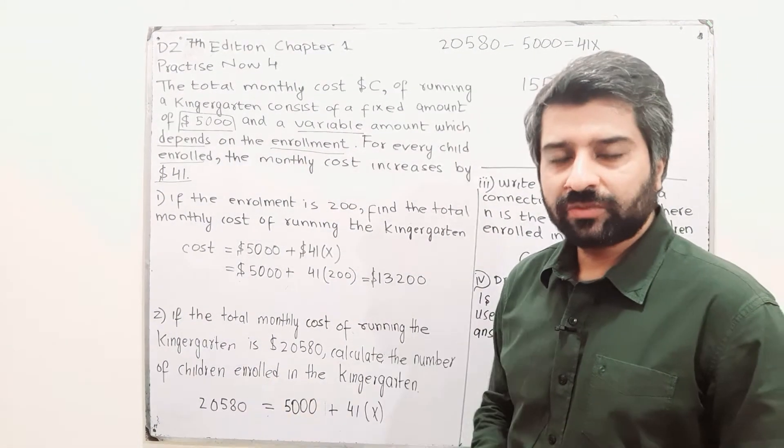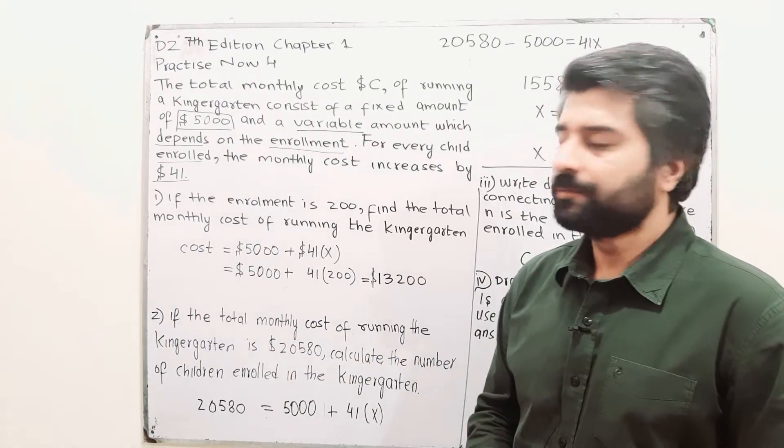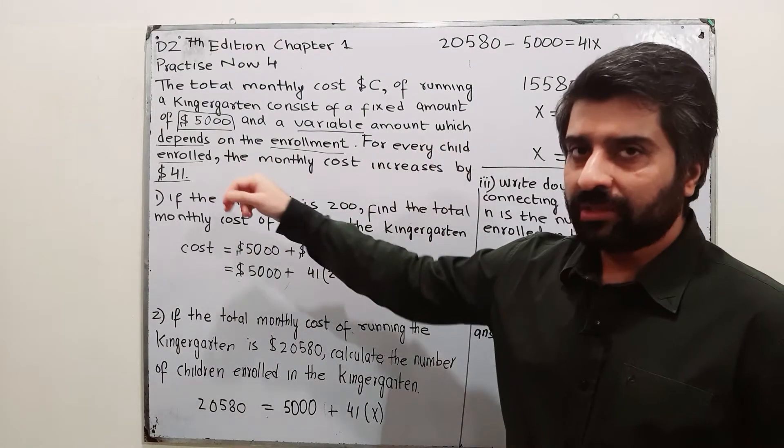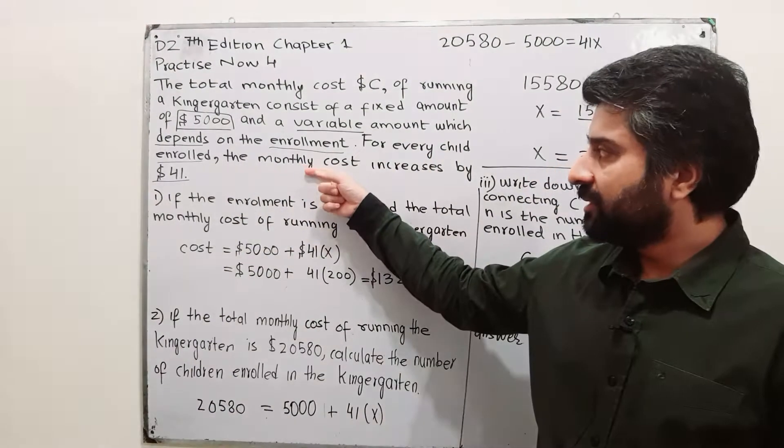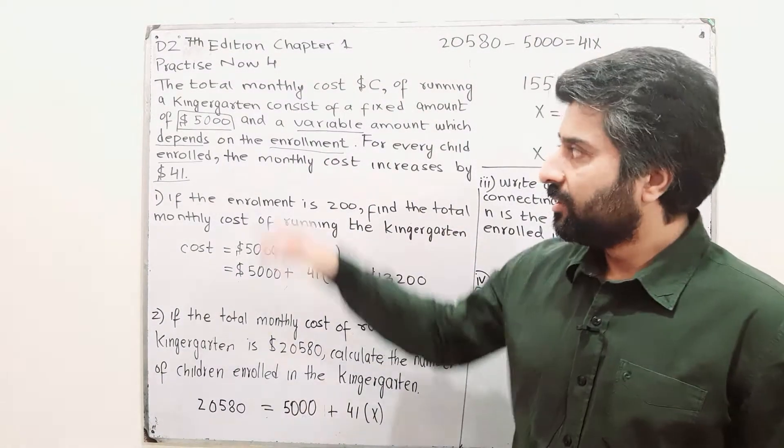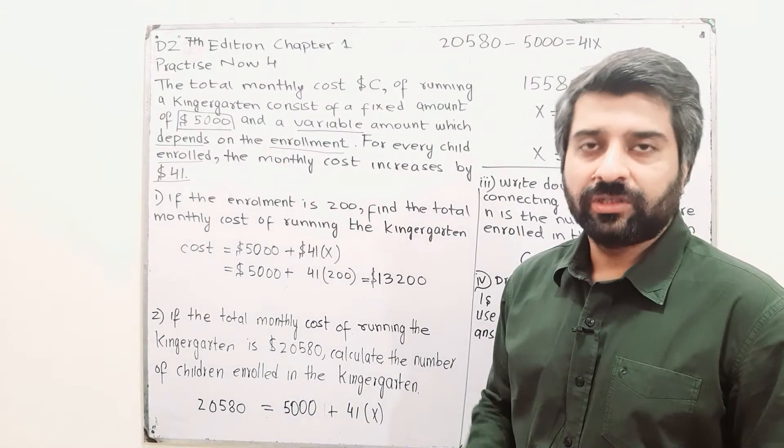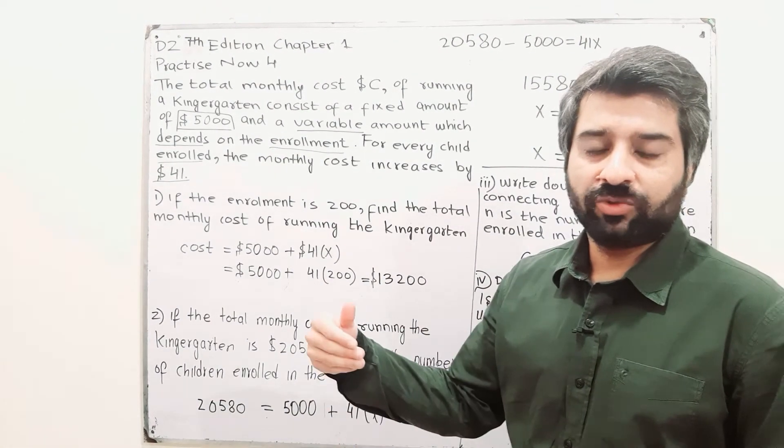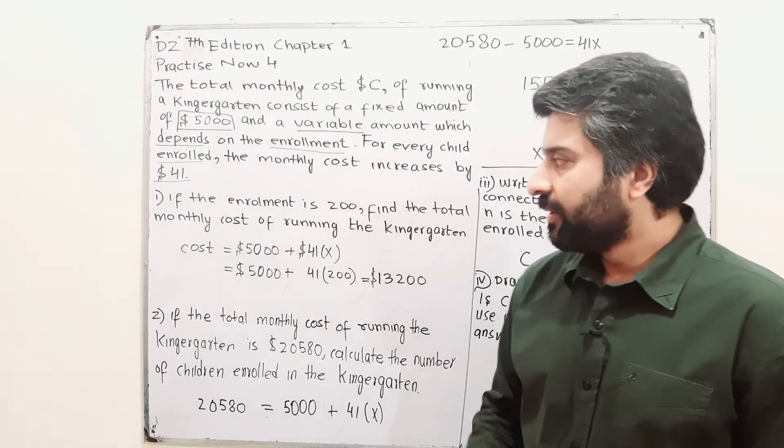The more the students will be, the more this amount will be. For every child enrolled, if you enroll a child, the monthly cost increases by $41. $5,000 is fixed cost, $41 per student is variable because when you will increase the number of students, you have to increase the variable cost.